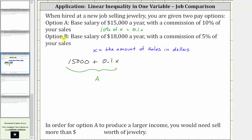Now for an expression for option B. Option B offers a salary of $18,000 a year, which gives a constant of 18,000, and then plus 5% of your sales, which would be 5% of x. 5% of x is equal to 0.05 times x, or 0.05x. And therefore the annual income for option B is 18,000 plus 0.05x.